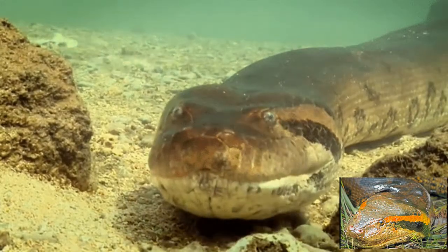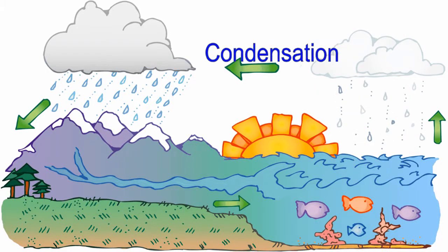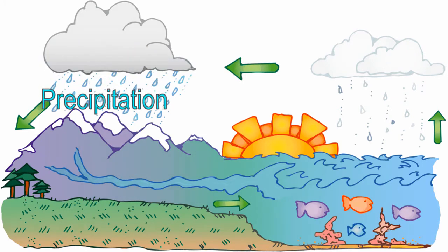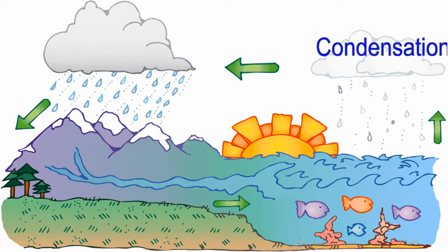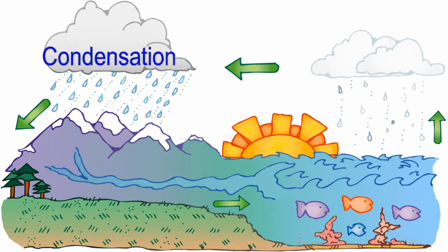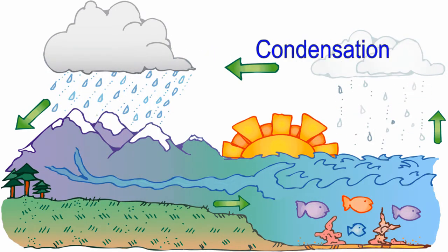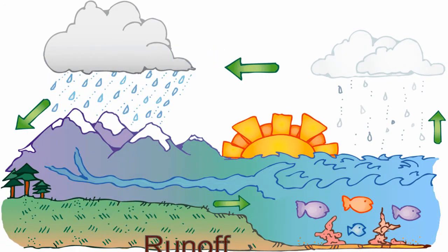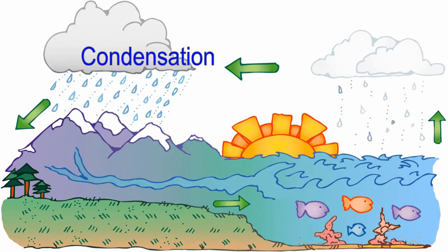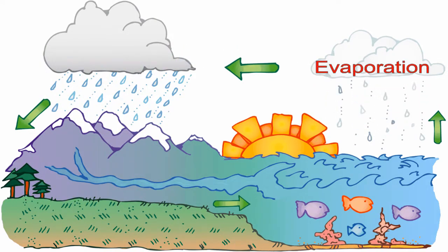This region receives high rainfall because of the high temperature near the equator, which causes faster evaporation of water from the earth's surface and thus causes a lot of rain. But can you tell me why it rains around 2 pm only? I'll be waiting for your answers in the comment section.